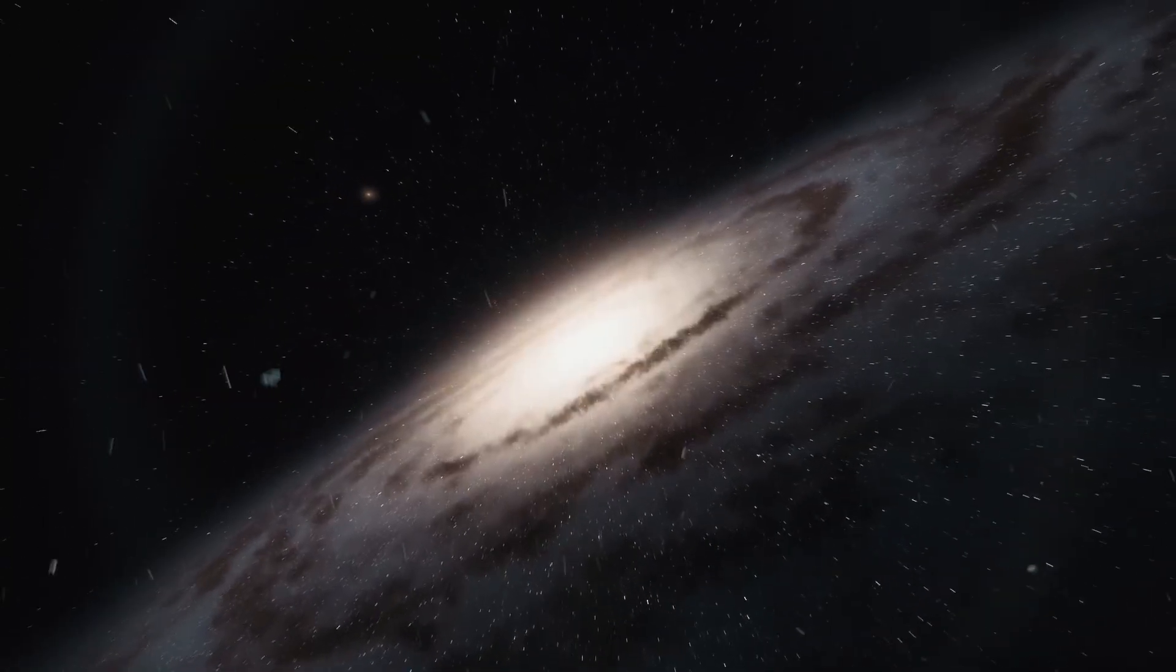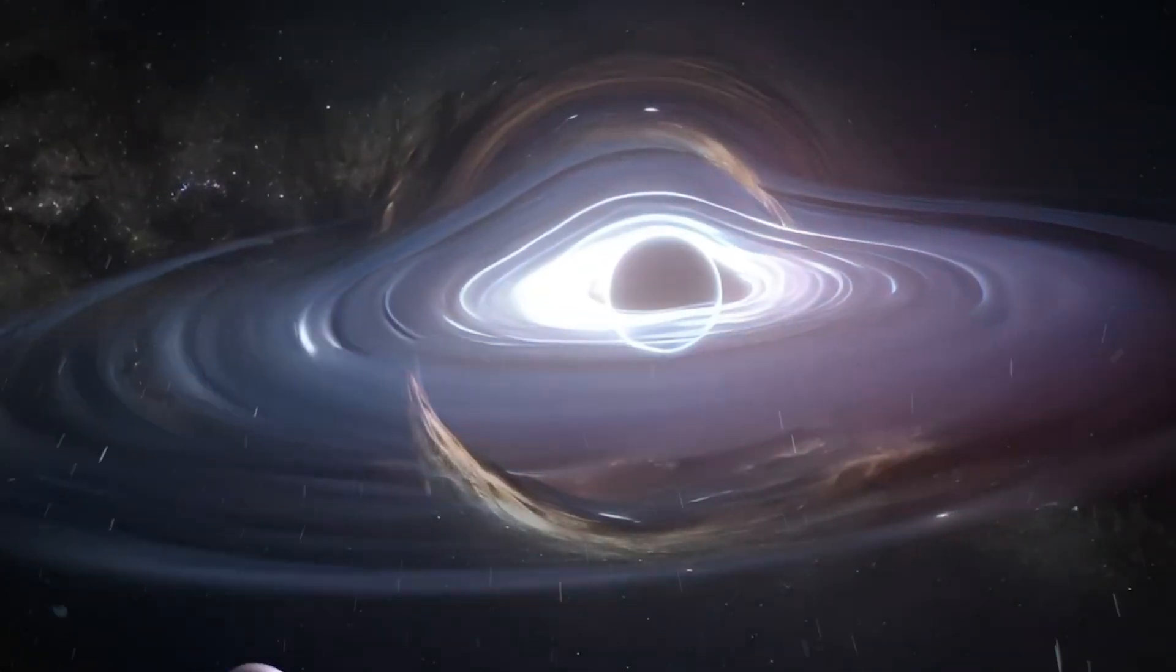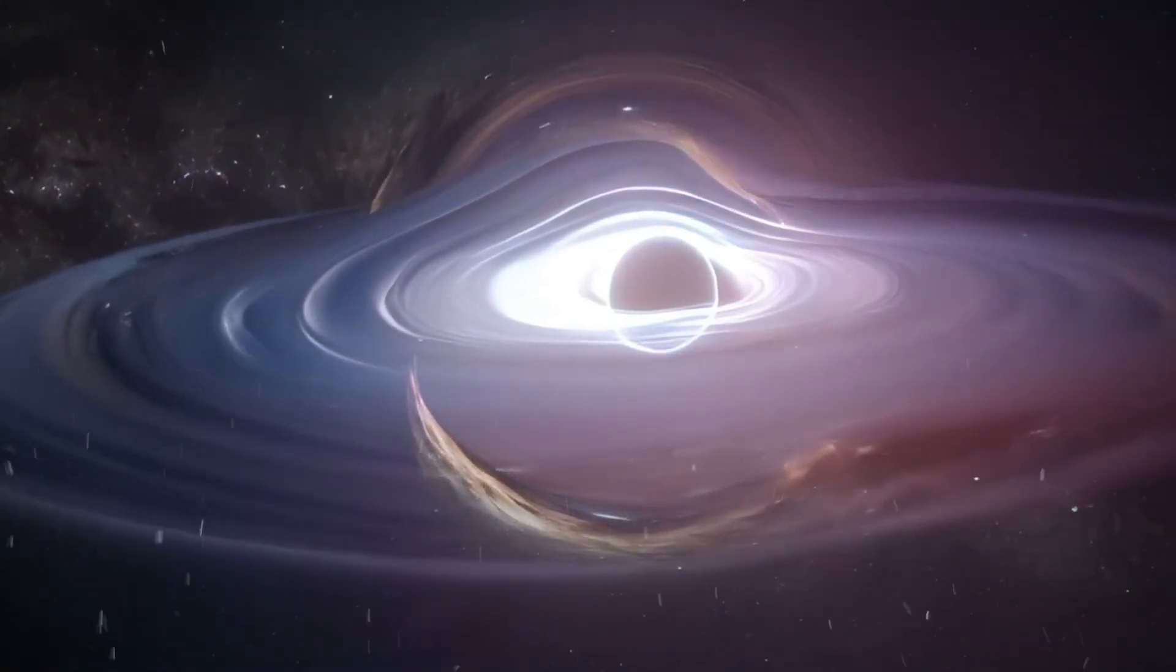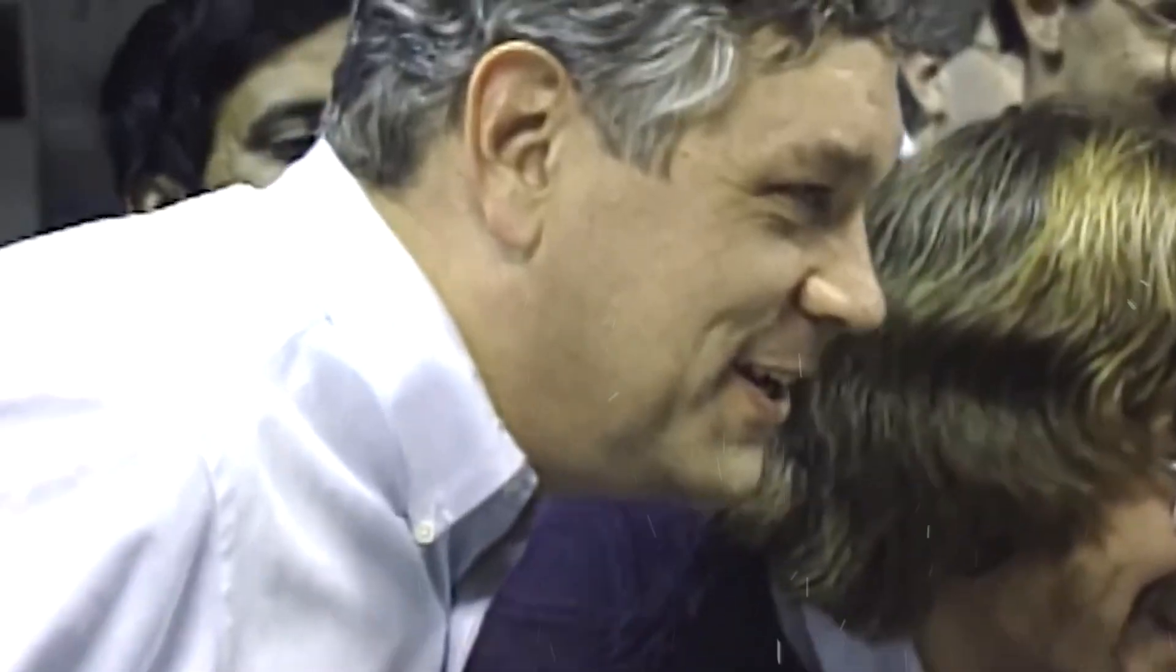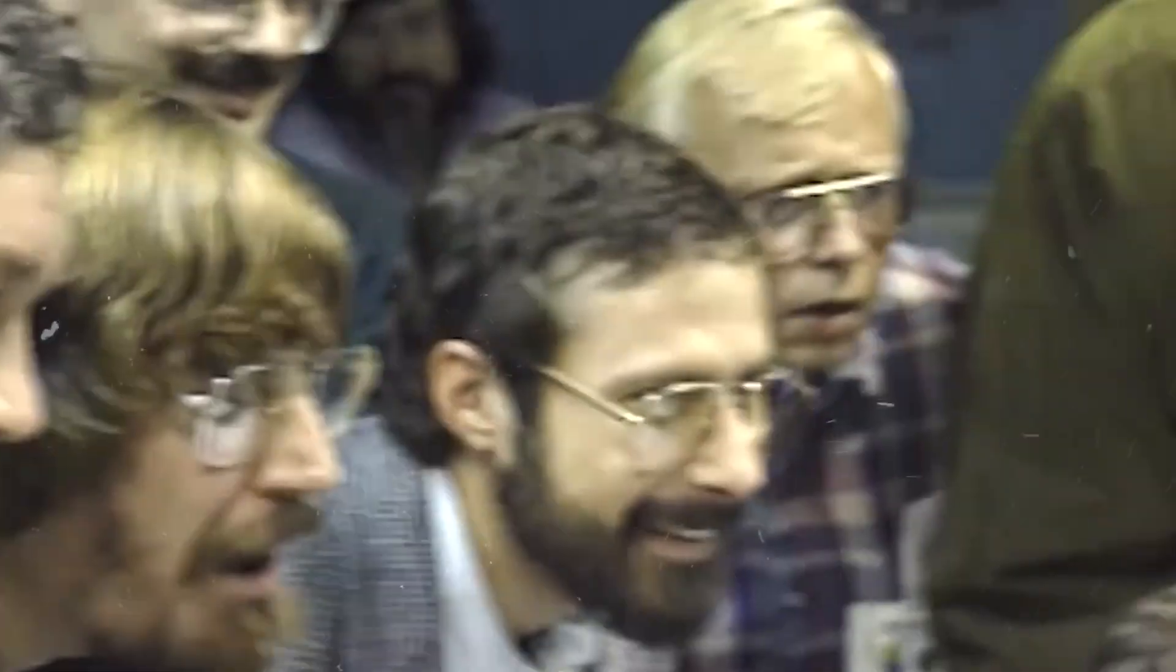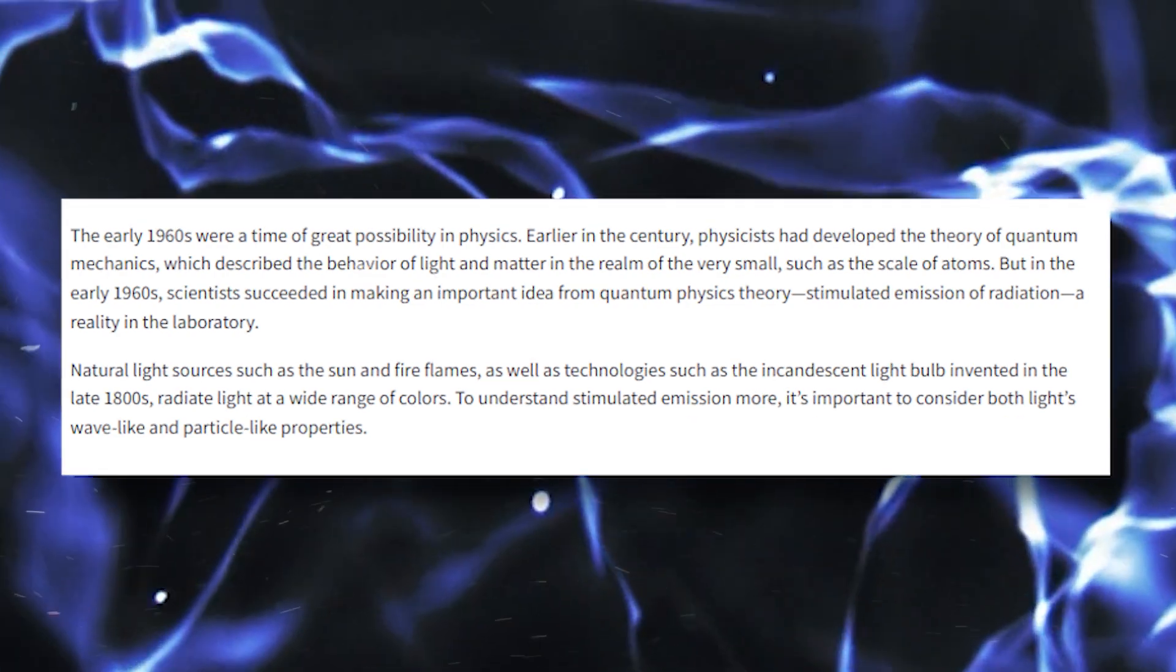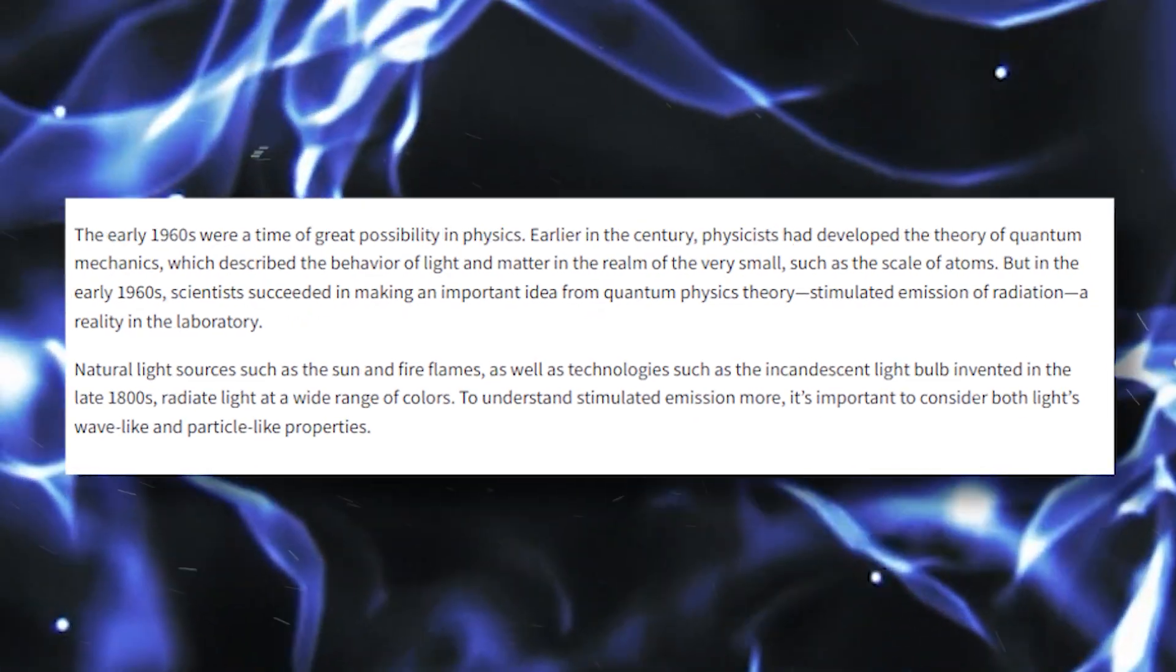This astonishing coincidence prompts us to ponder whether our universe might resemble the inside of a black hole. But wait, it gets even more fascinating. In the 1960s, scientists stumbled upon a remarkable discovery. A faint radiation uniformly spread across the sky, emanating from every direction.